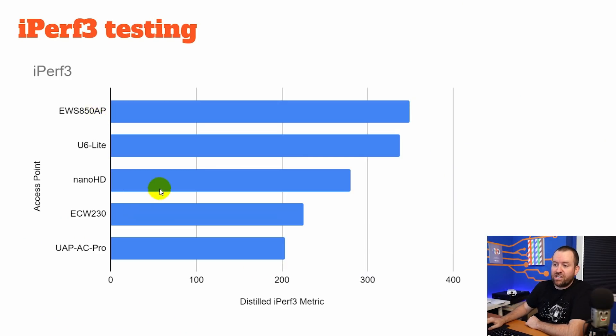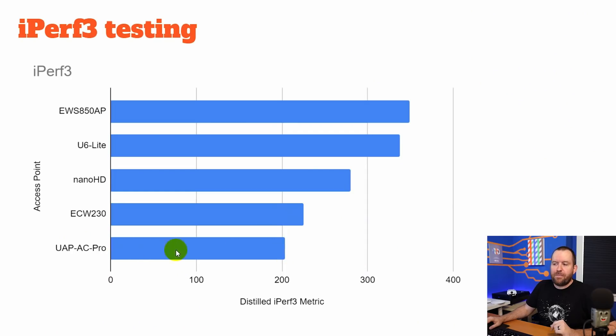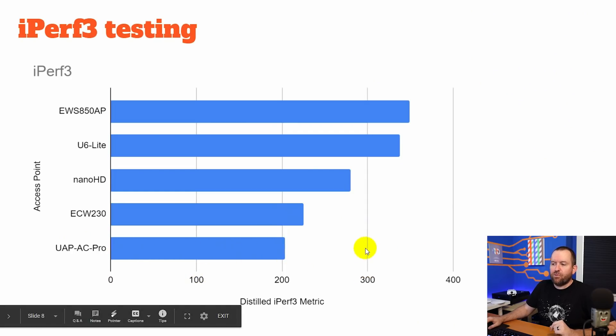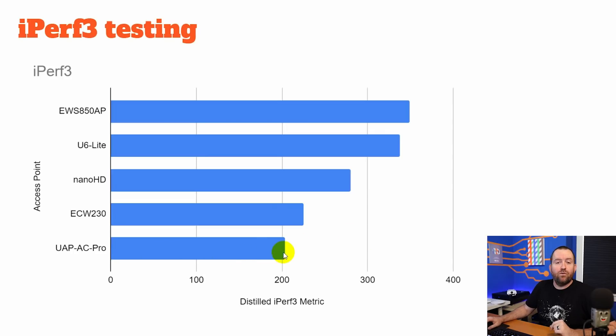Third place was the Nano HD — 4x4 multi-user MIMO Wi-Fi 5 — which beat out, believe it or not, the ECW230 from Ingenious, which is a 4x4 multi-user MIMO Wi-Fi 6 access point. The difference between Wi-Fi 6 and Wi-Fi 5 has less to do with speed to any individual client and more to do with aggregate speed across multiple clients in a dense environment. Finally, at the bottom of the pack, we had the UAP-AC Pro with a combined iPerf speed test of just over 200 megabits per second.